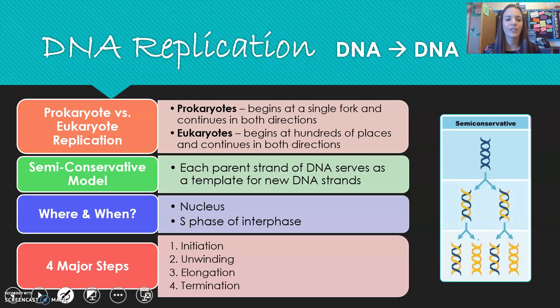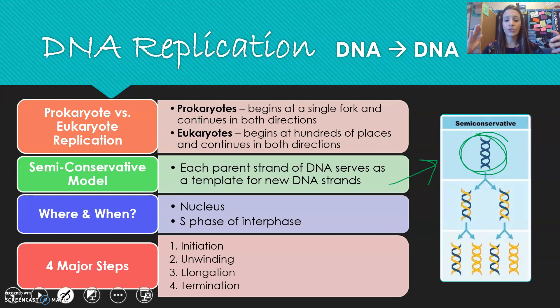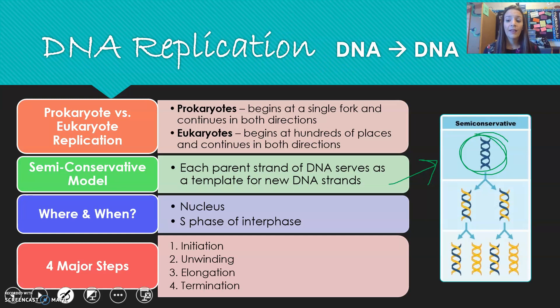We follow the semi-conservative model of DNA replication: the parent DNA splits apart, and each strand helps make new DNA. You get two DNA molecules, each with half parent and half new strand. DNA is found in the nucleus — unless you're a prokaryote, in which case it's in the nucleoid — and replication happens during the S phase of interphase.